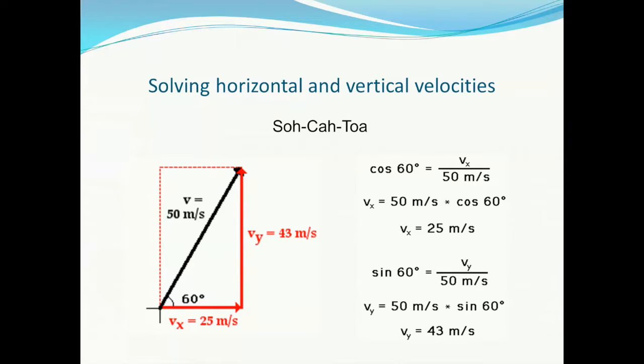We need to use the familiar phrase SOH CAH TOA to remember the trigonometry to solve for the velocity components. SOH, which is the sine function or opposite over hypotenuse, gives us our y-component. CAH, or adjacent over hypotenuse, gives us our x-component. This is the cosine function.